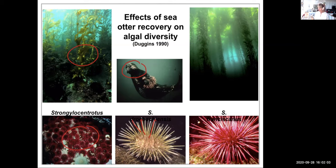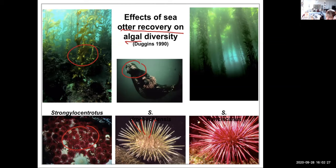When otters are reintroduced, there is a recovery of algae and algae diversity. Sea otter populations exist in Monterey, California and on the north end of Vancouver Island. In Monterey they're very easy to see — you can go on a kayak and spot them quite easily.